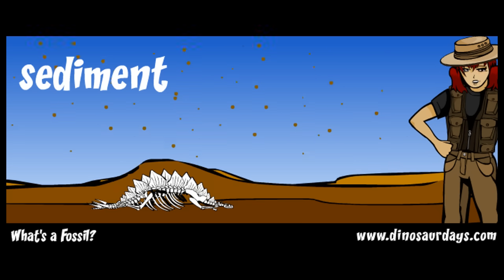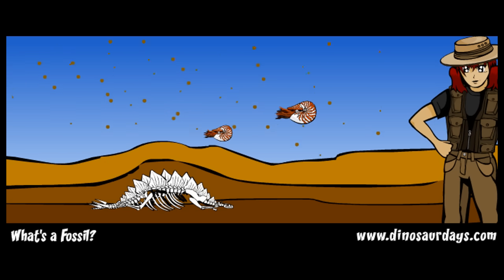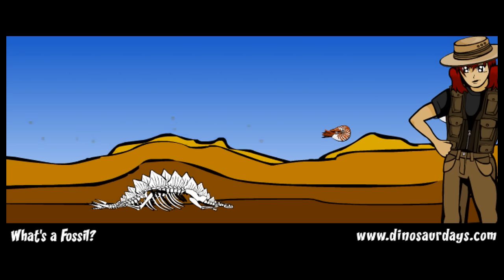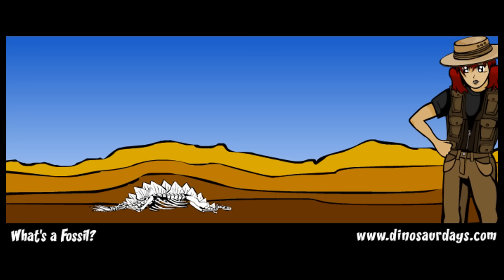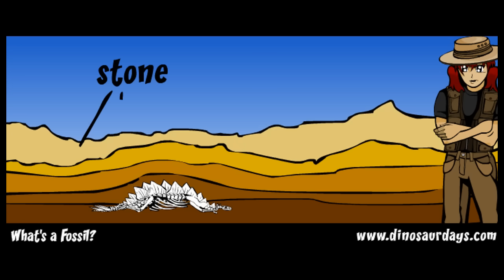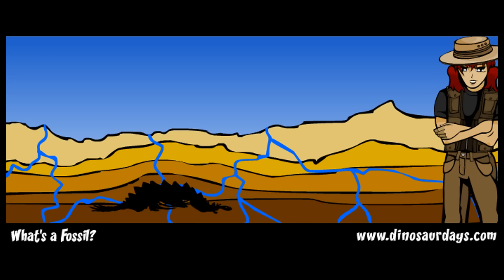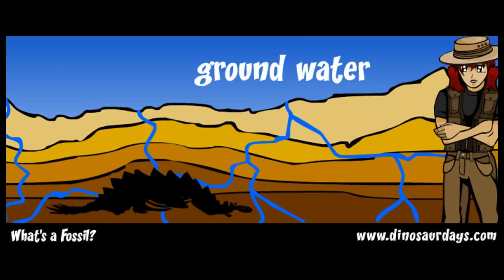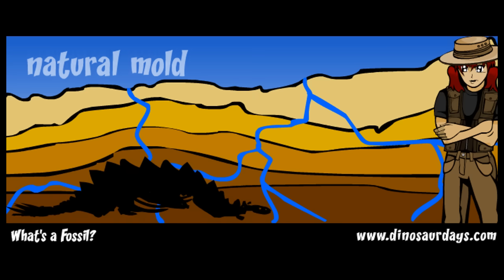More layers of sediment fall on the skeleton. Over time, the floor of the river sinks from the weight of the sediment. The lower layers of soft mud and sand are pressed into hard rock. Now the skeleton is completely surrounded by compressed stone. The bone is slowly washed away by little trickles of water, called groundwater. The bones leave an open space in the exact shape of the dinosaur skeleton. This open space is called a natural mold.